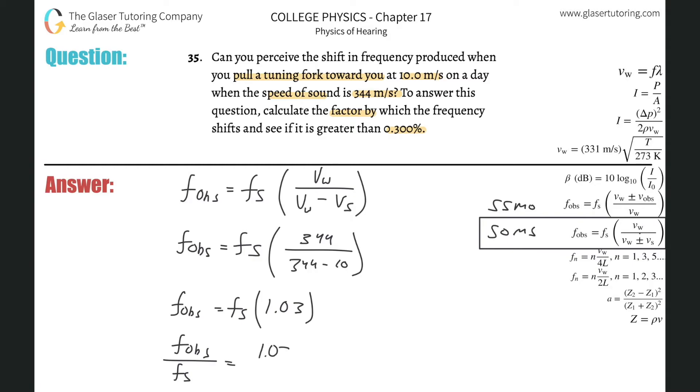In other words, if the frequency of the source was, let's say, 100 hertz, that means the observer of that tuning fork would observe a frequency of 103 hertz.